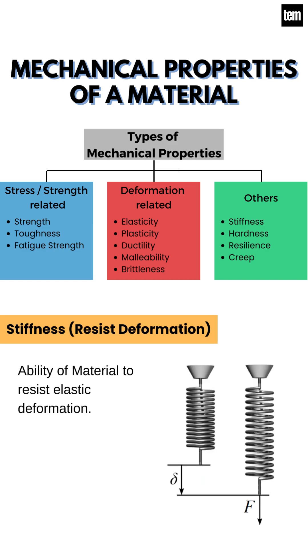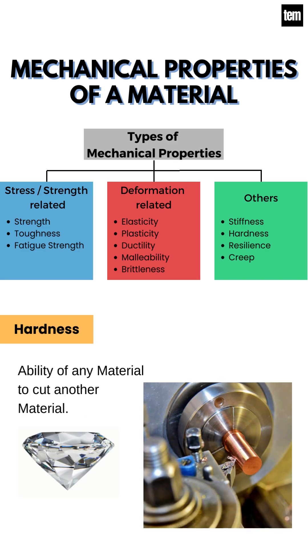Stiffness: the ability of a material to resist elastic deformation. Hardness: the ability of any material to cut another material.